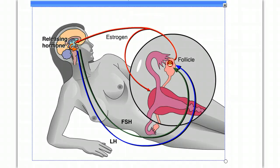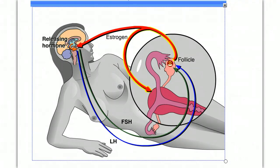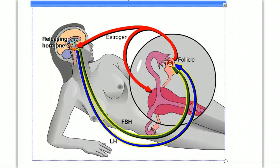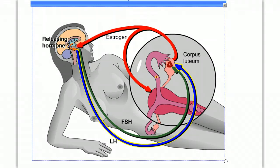As the follicle grows, it secretes more and more estrogen, stimulating further thickening of the uterine lining. Estrogen levels reach a peak just before the midpoint of the cycle. At this point, the response of the hypothalamus and pituitary reverses — the higher level of estrogen actually stimulates the hypothalamus to signal the pituitary to secrete a burst of FSH and LH. It is the burst of LH that triggers ovulation on about day 14. The ovum develops, the follicle ruptures, and the nearly mature ovum is released and swept into the oviduct. LH also causes the ruptured follicle to develop into a glandular structure called the corpus luteum.